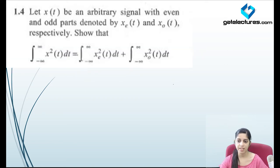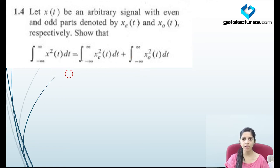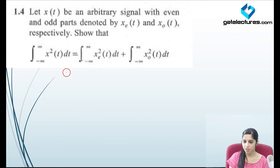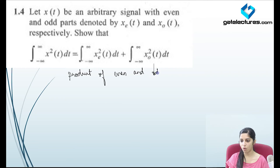Now move to the next question. They are saying that x(t) is an arbitrary continuous time signal which has even and odd parts denoted by x_e(t) and x_o(t). We need to prove that the product of even and odd signal is an odd signal. Consider x(t) equals x_e(t) times x_o(t).